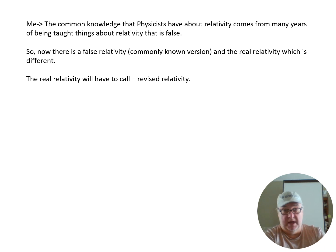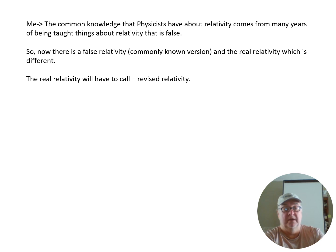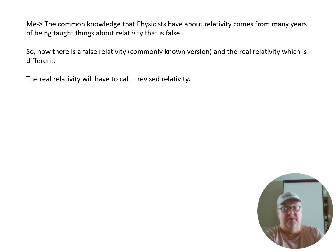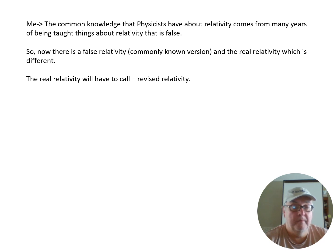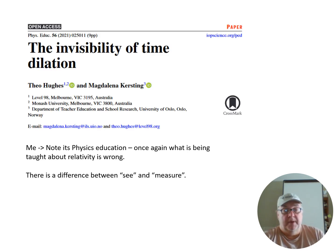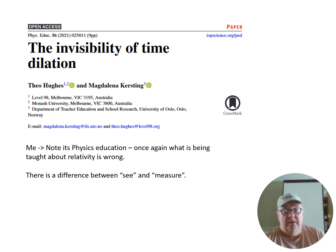The common knowledge that physicists have about relativity comes from many years of being taught things about relativity that are false. So there is a false relativity — the commonly known version — and most people know this false relativity. The real relativity is different, and we'll have to call it revised relativity. This other paper is also about physics education; once again, what has been taught about relativity is wrong.